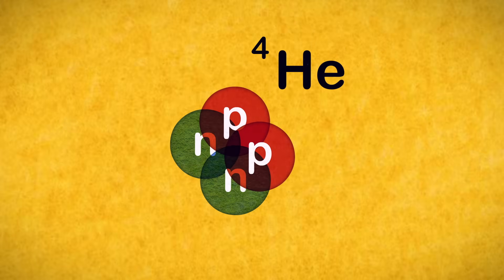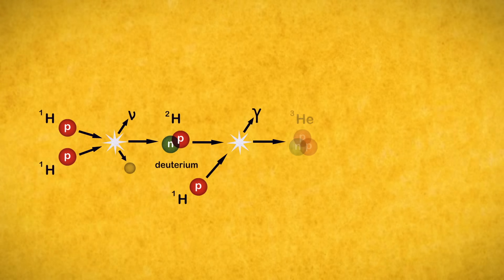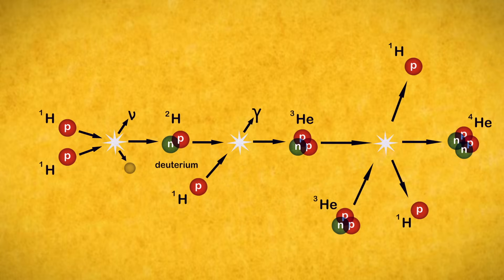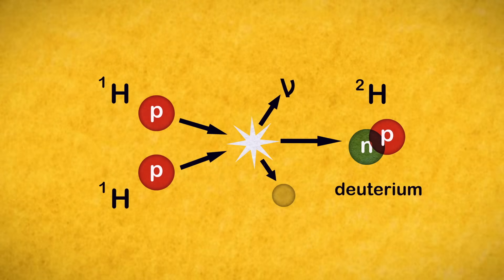Fusion in our Sun mostly produces helium nuclei. In the most common pathway, two protons fuse to form a deuterium nucleus, which then fuses with another proton to form a helium-3 nucleus, which then fuses with another helium-3 nucleus to form a helium-4 nucleus. But there's a catch. That first step is incredibly rare.